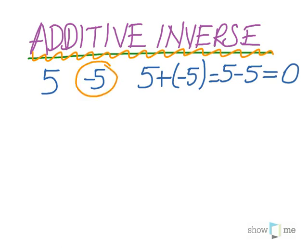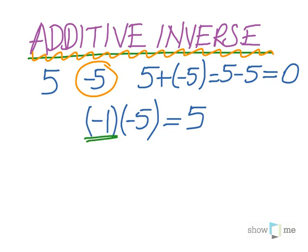So what happens if you multiply -5 by -1? You get your number, which is 5. So the same applies for binomials, trinomials, and stuff. If you have x - 2, the additive inverse will be -(x - 2), right? Because we just put a minus in front of our number to get the additive inverse.